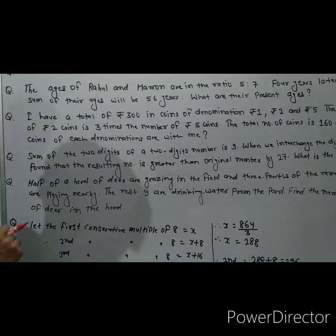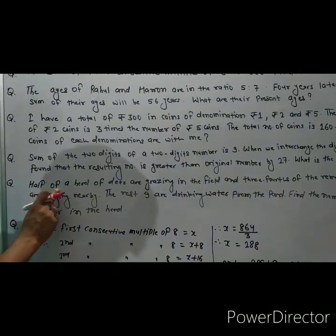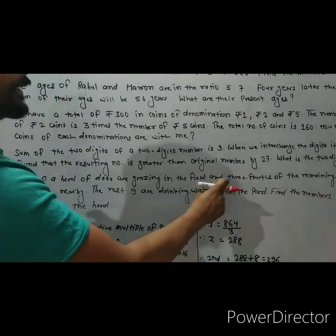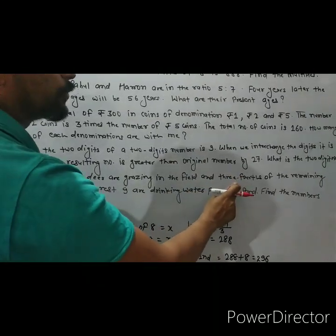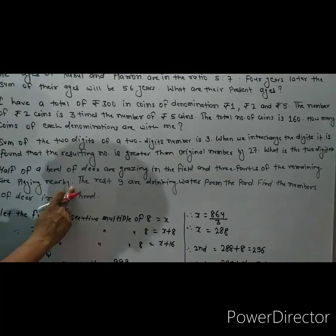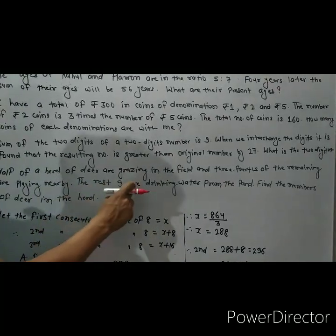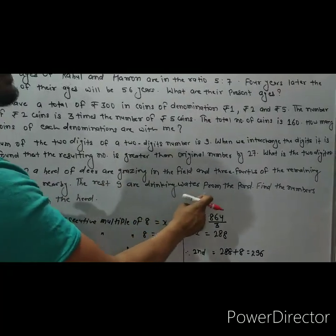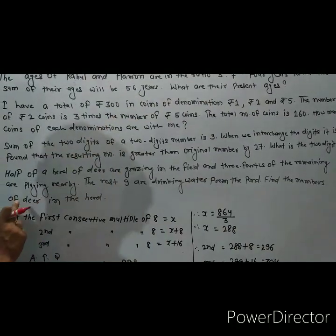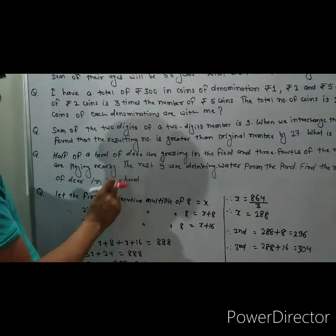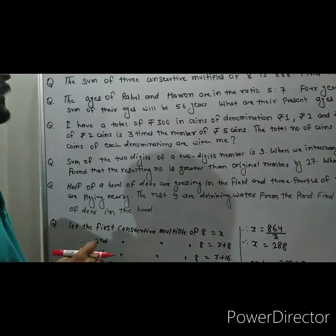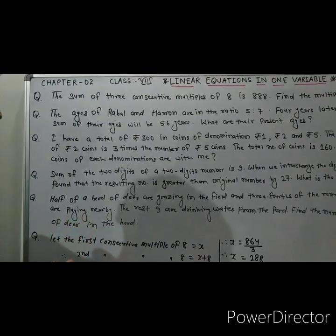Question number 5: Half of a herd of deer are grazing in the field and three-fourths of the remaining are playing nearby. The rest 9 are drinking water from the pond. Find the number of deer in the herd. These are 5 very very important questions of class 8.